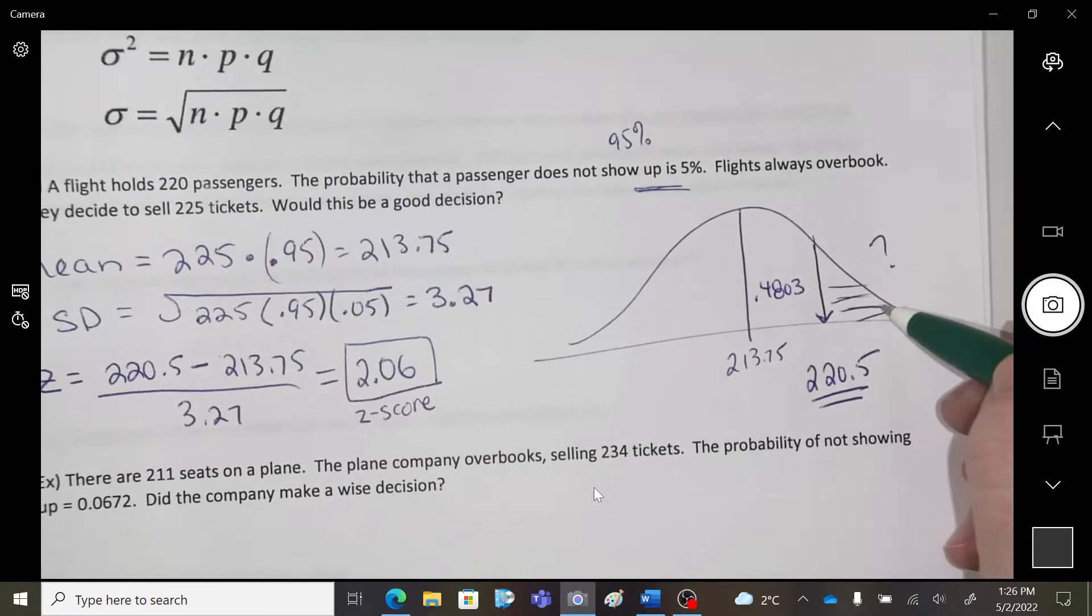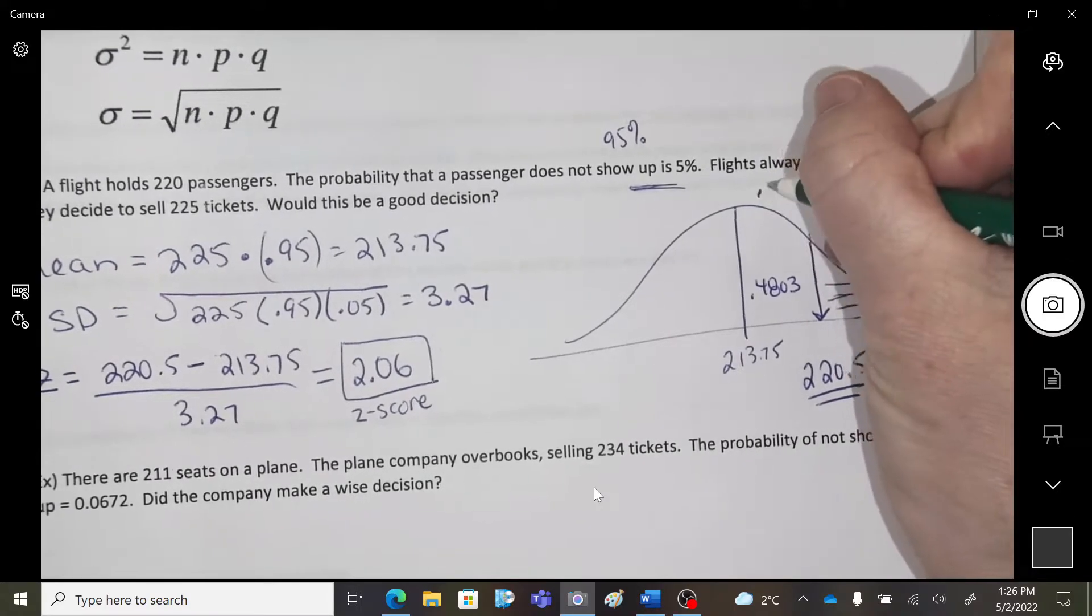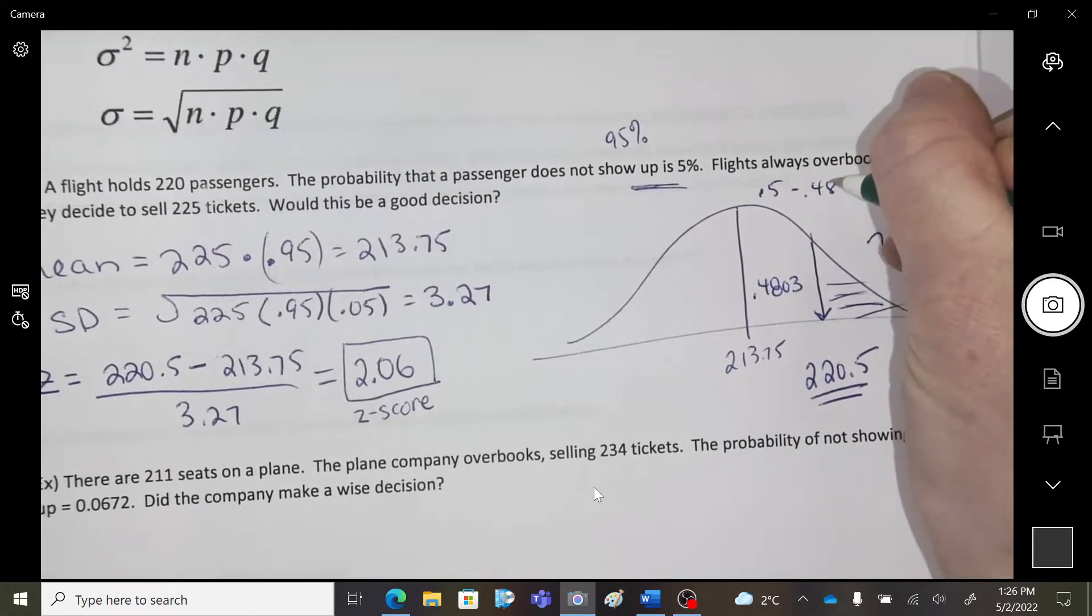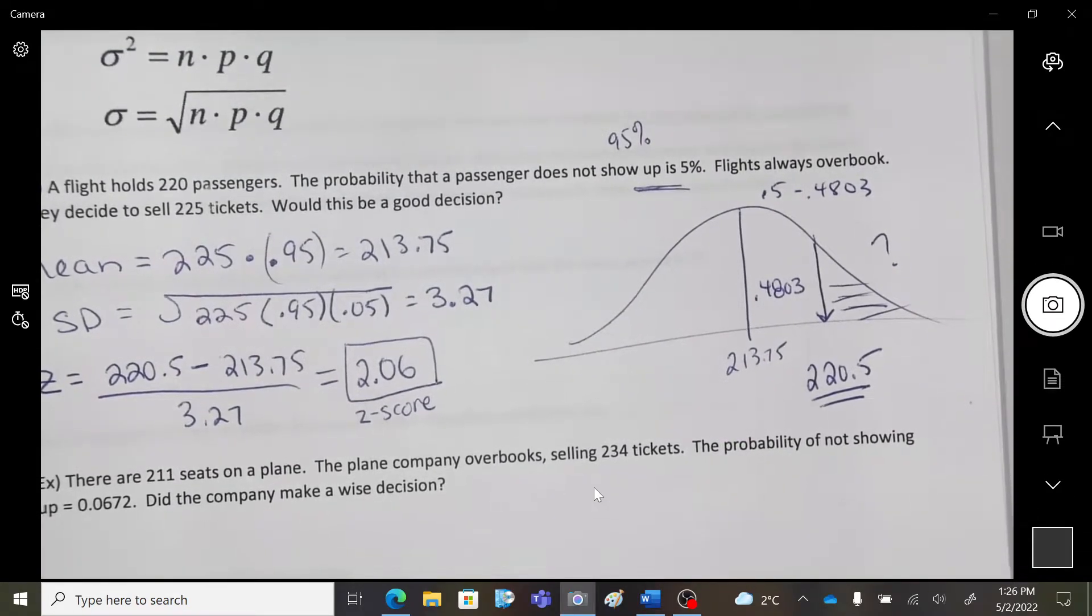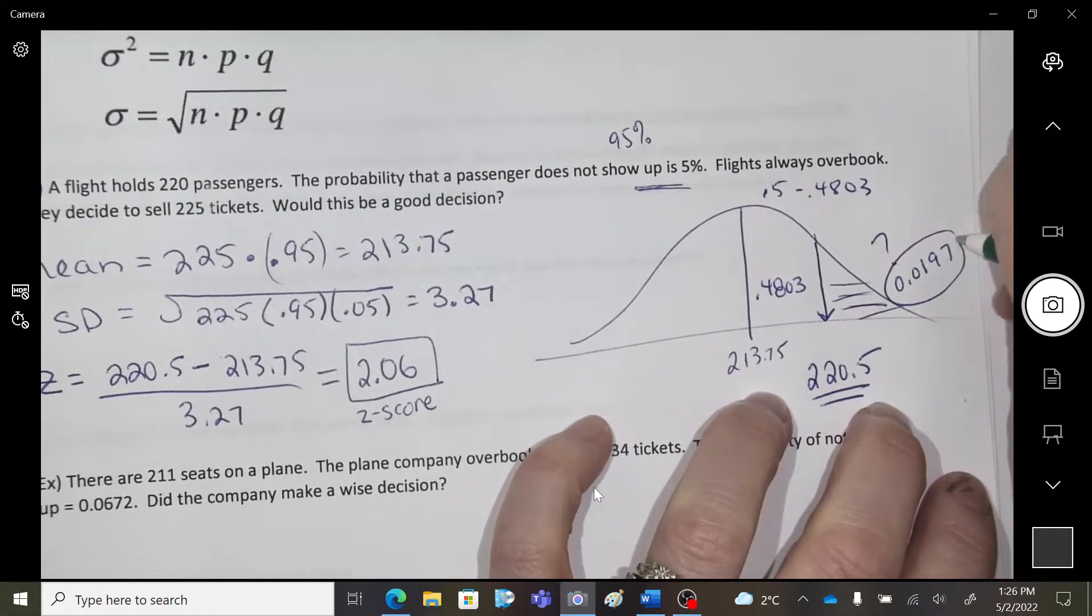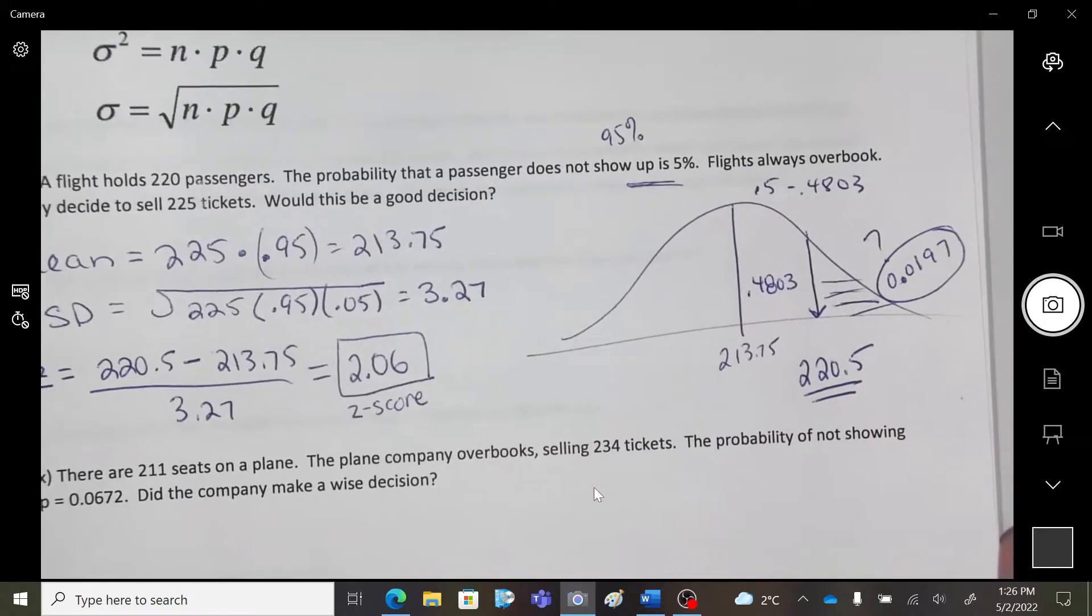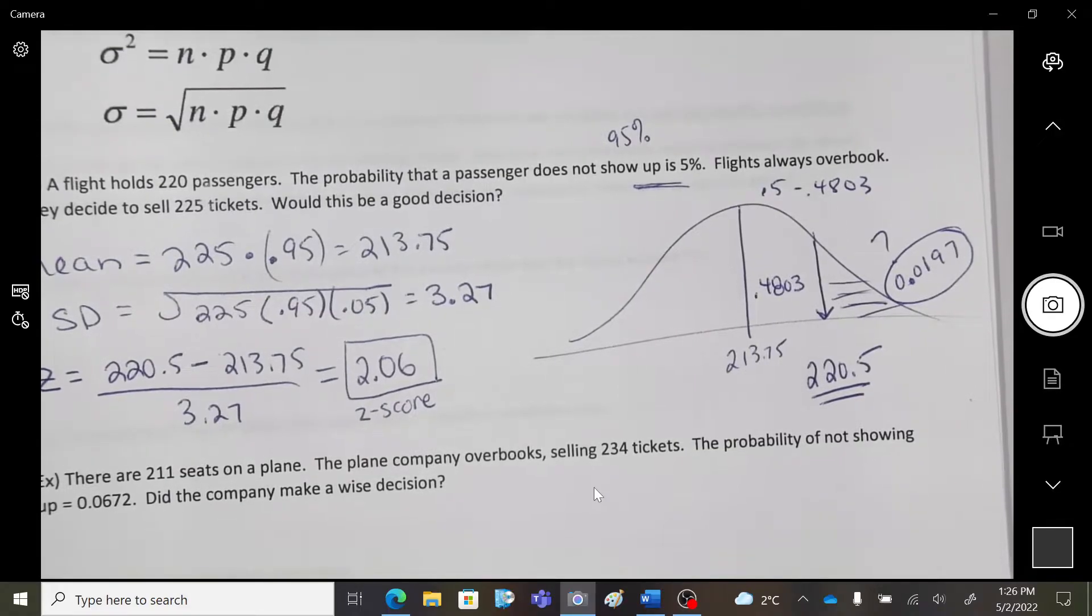Then, I'm going to do that from a half, right? You see my visual here? A half minus the 0.4803 leaves me with... So, if I'm analyzing this, you have a 1.97 chance, percent chance, that you're going to overbook. So, is this a good decision? Would you risk it? Yeah.